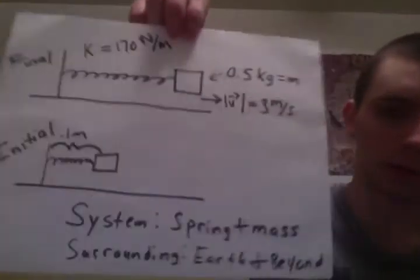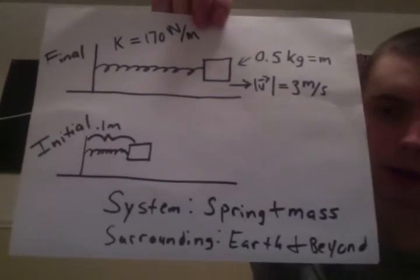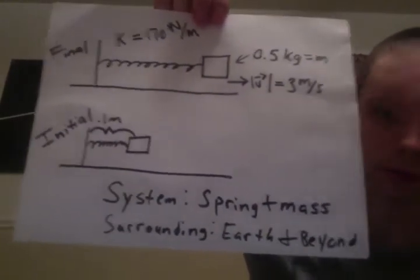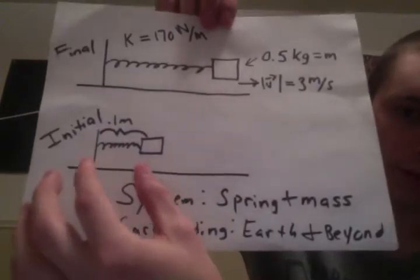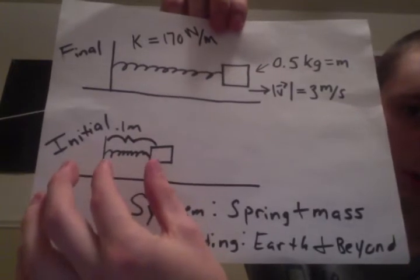All righty, so the problem is in the comments below and the video description. Here's a diagram of what's going on, and it's important. Here are all the givens regarding the initial position, the spring being coiled up at one meter, and then this mass being released as the final.